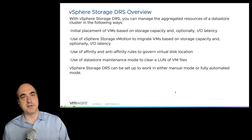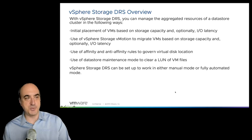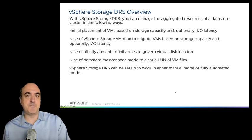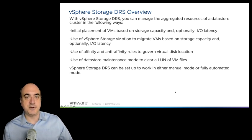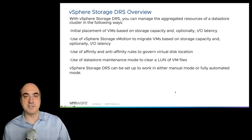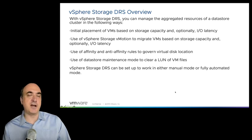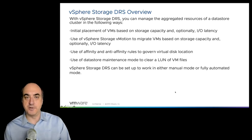The key functions of storage DRS include initial placement: when you create a VM, storage DRS places the VM files in the appropriate data store within the cluster based on current capacity and IO latency conditions — the admin just chooses the data store cluster. You can also set up affinity and anti-affinity rules to govern how virtual disks are placed. For instance, a VM's boot drive and data drive don't have to be in the same data store.